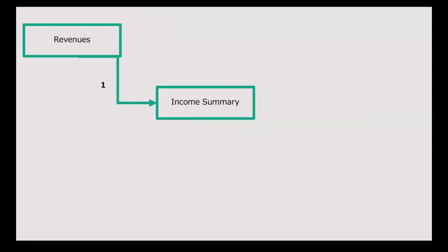There's a process we're going to get into with these closing entries. There are four closing entries that we make and they're going to be in the same order every time. The first step is to close all of your revenue accounts to a new account called income summary. Then we close our expenses to income summary. Those will be the first two closing entries in our process.